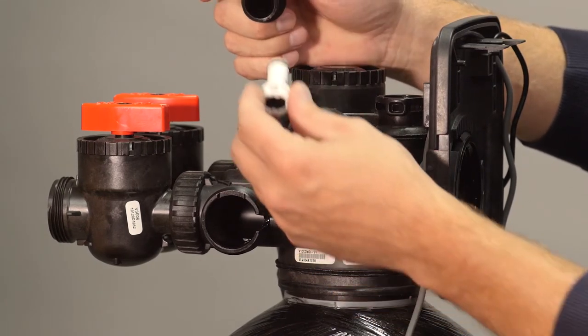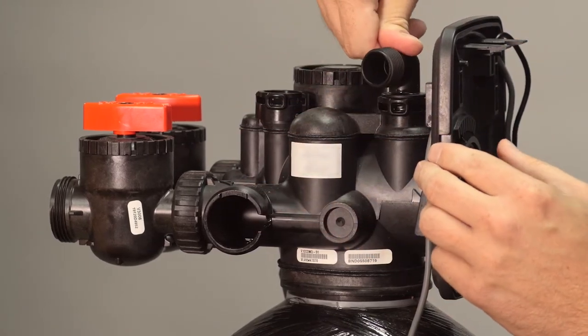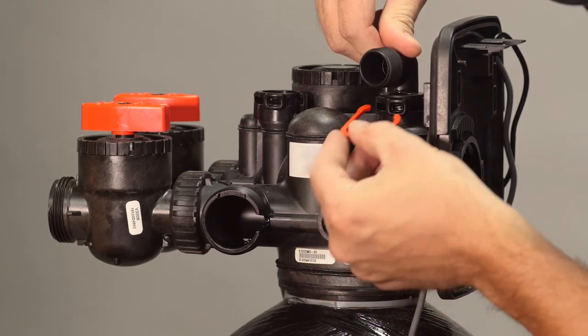Press the drain line flow control retainer into the drain elbow and press the drain L into the valve body. Secure it with the locking clip.